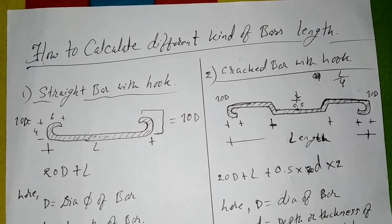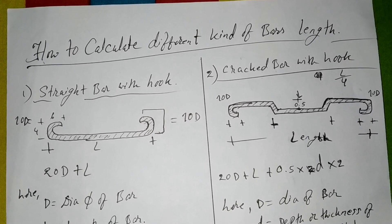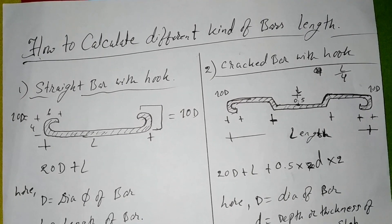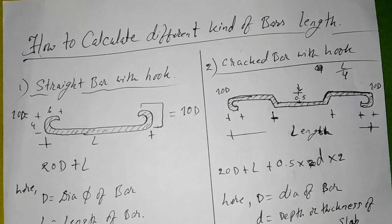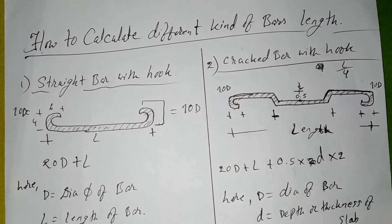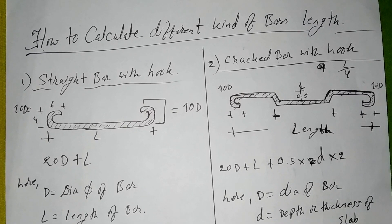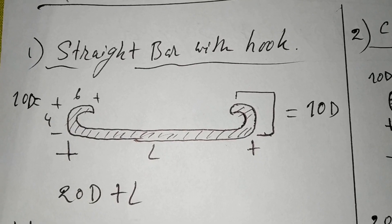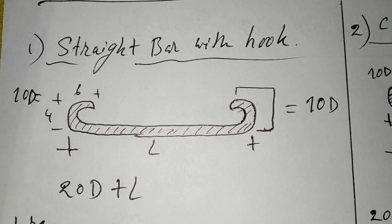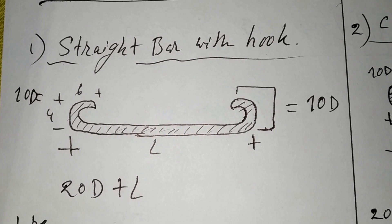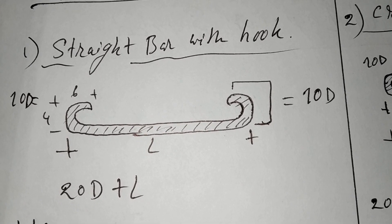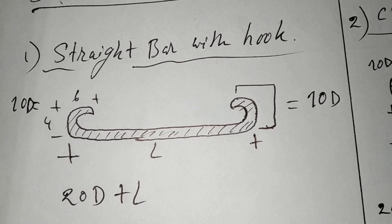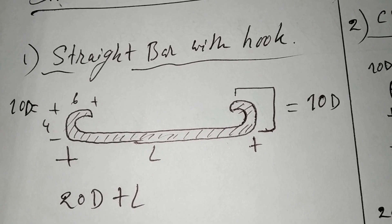In this video, I will tell you that the Steelers are very important. There are very many options. This is the thumb of the Steelers. The Steelers is 3D. So here, 10 x all the f, 10 x DI.